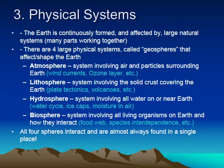The third element is physical systems. The Earth is continuously formed and affected by large natural systems. A physical system explains how different physical characteristics interact with each other — not just listing them, but showing how natural forces affect the physical environment. There are four large physical systems called geospheres. The first is the atmosphere, which includes the air surrounding the Earth, with examples like wind currents and the ozone layer. The second is the lithosphere, referring to the solid crust covering the Earth — plate tectonics and volcanoes are examples.